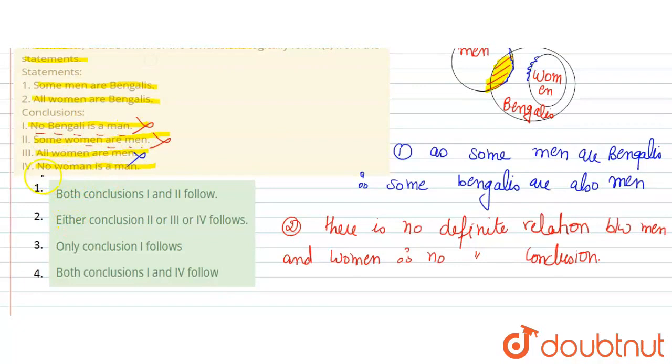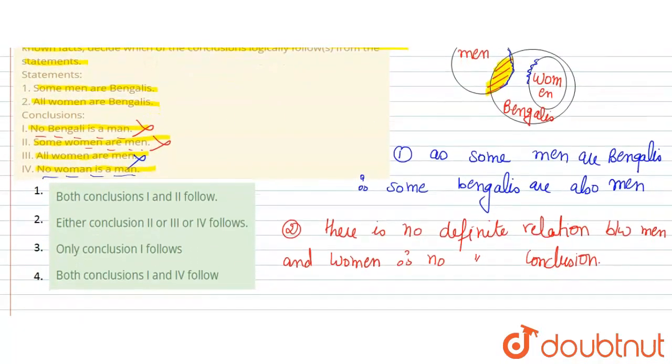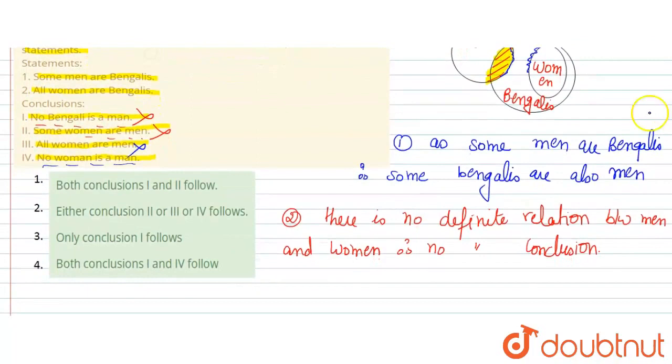Then given is: no Bengali is a man. Now, no woman is a man. No woman is a man. So this will also be wrong.